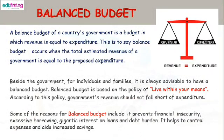Balanced budget: a balanced budget of a country's government is a budget in which revenue is equal to expenditure. This is to say, balanced budget occurs when the total estimated revenue of a government is equal to the proposed expenditure. For individuals and families, it is always advisable to have a balanced budget. Balanced budget is based on the policy of 'live within your means.' According to this policy, government's revenue should not fall short of expenditure.